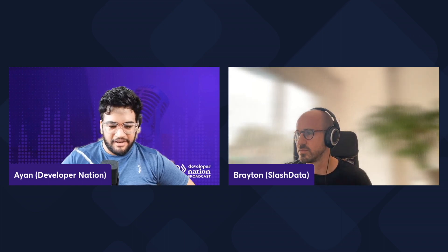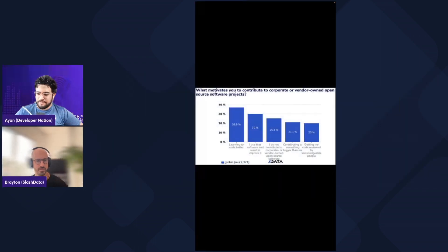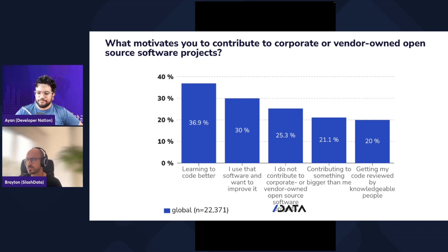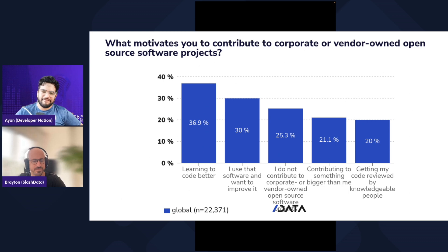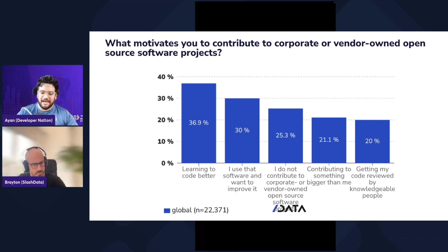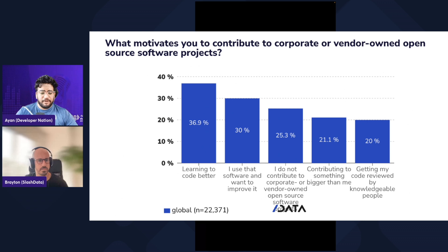Moving to the next insight: this one asks what motivates developers to contribute to corporate or vendor-owned open source projects. This has been my favorite insight from the Pulse report, mainly because back in the day I also looked specifically for corporate-owned open source projects — contributing to them felt like a way to be mentored by some of the best people in the industry and potentially end up working for them. Many software companies have open source projects out there; Airbnb has great graphic libraries open sourced, and Facebook has open sourced entire frameworks. So let's talk about why developers choose to contribute from a report perspective.